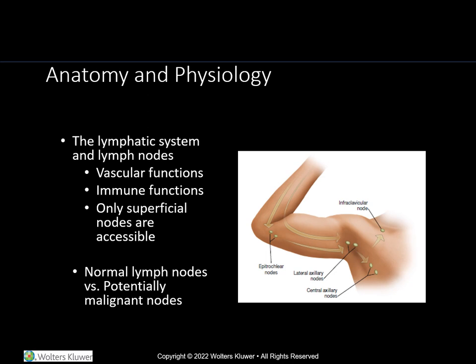There are also a number of factors that may impact the ability to feel lymph nodes. Infection can cause lymph nodes to be more prominent and or tender. Also, like amplitude of pulses, lymph node size can vary between each individual. Understanding how to identify normal or benign lymph nodes versus potentially malignant lymph nodes is essential. Normal or benign lymph nodes will be slightly tender and movable with palpation. Potentially malignant lymph nodes will be fixed, non-movable, and non-tender.